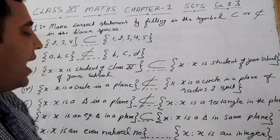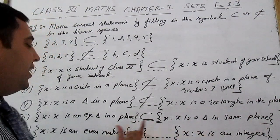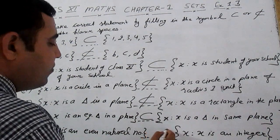x is such that x is an even natural number, and x is such that x is an integer. We know that even natural numbers lie in the integers—all integers contain all even natural numbers. Therefore it is a subset.